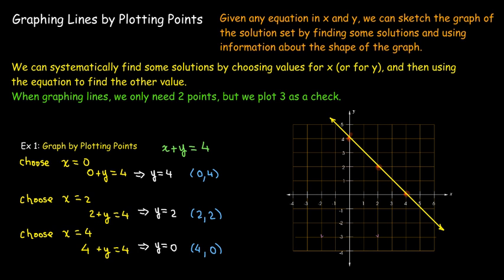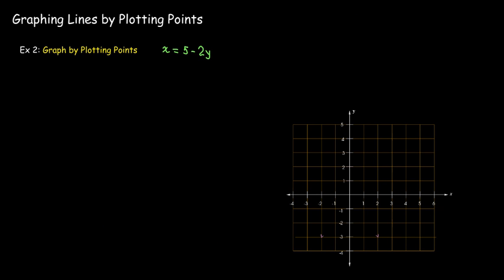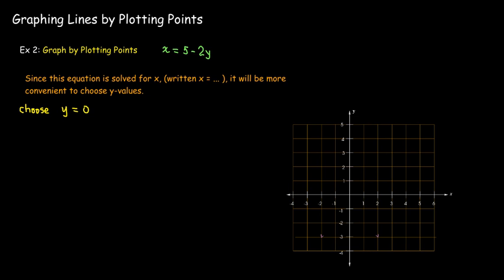Let's look at another example here. Now, in this equation, I have x equals 5 minus 2y, and it's solved for x. We have x equals. So now instead of choosing x values, I'm going to choose y values. So I'll start with y equals 0, and go ahead and put 0 in for y. Solve for x. I get x equals 5. And I've got the point (5, 0) over here.